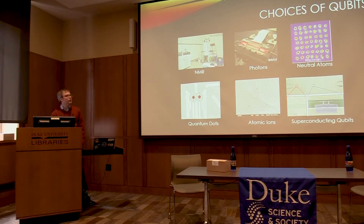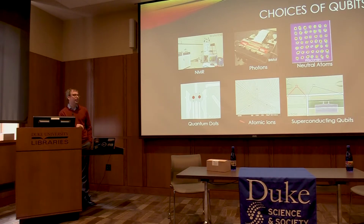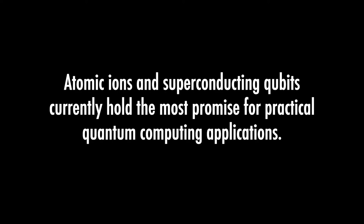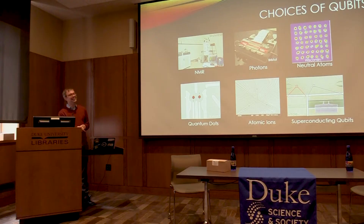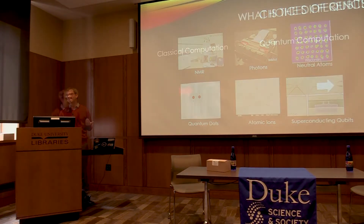At the moment, I would say that atomic ions, which I work on, and superconducting qubits, which Google and IBM and Intel work on, are the leading candidates for how to build a quantum computer right now.